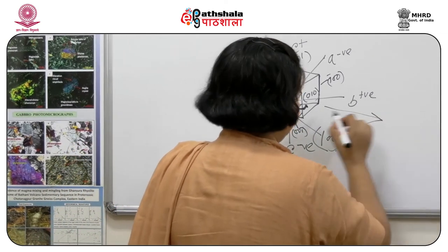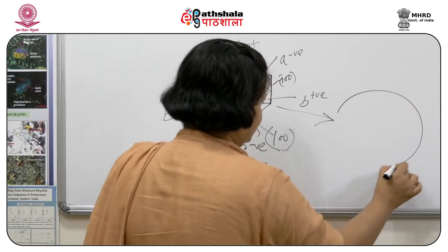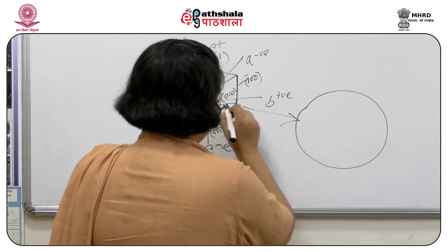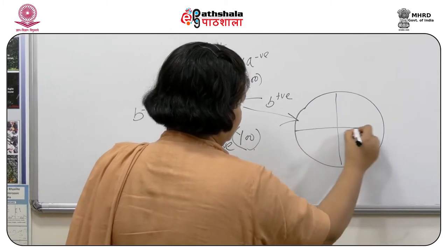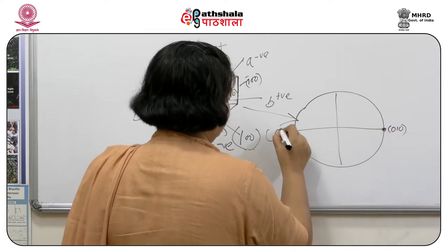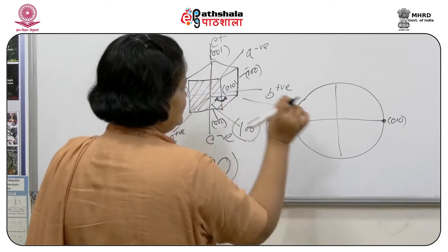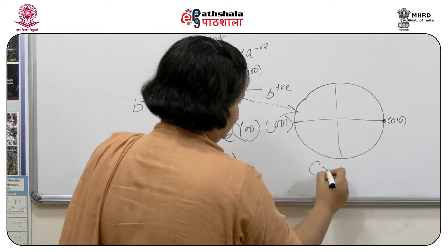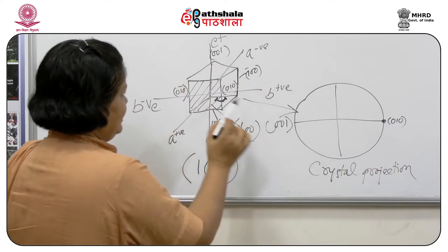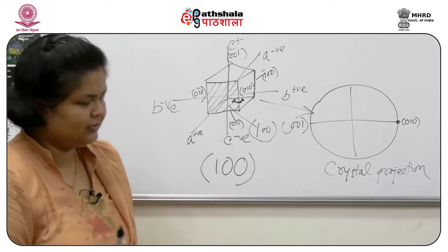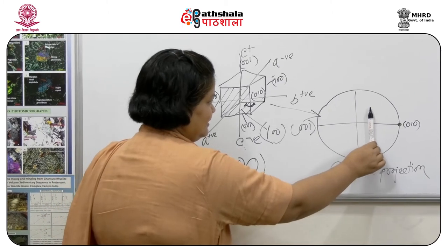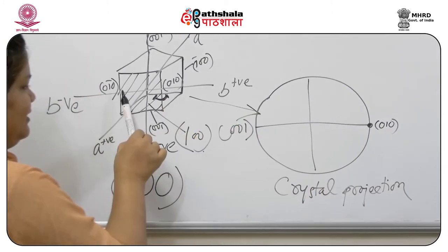Crystal projection is projecting crystal faces onto a planar two-dimensional surface — for instance marking the 0 1 0 face or the 0 0 1 face. Any two-dimensional planar projection of these faces is called a crystal projection, provided that the angular relationships between them are maintained in a reproducible format and the diagram reveals the crystal's symmetry.